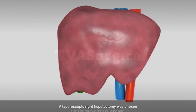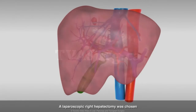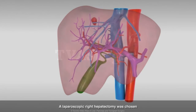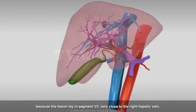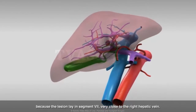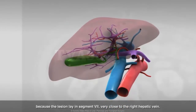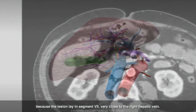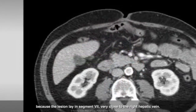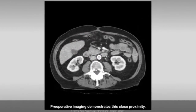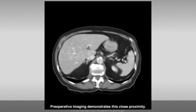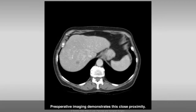A laparoscopic right hepatectomy was chosen because the lesion lay in segment 7, very close to the right hepatic vein. Preoperative imaging demonstrates this close proximity.